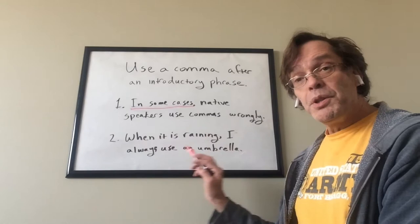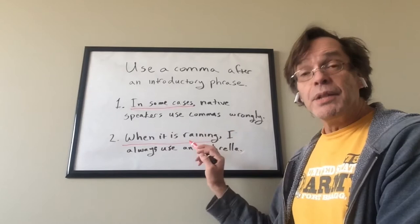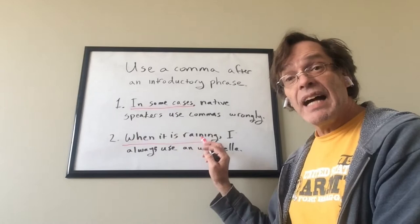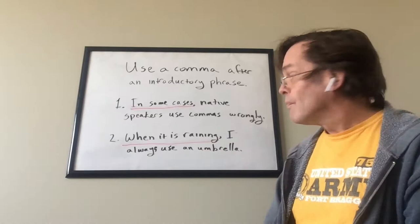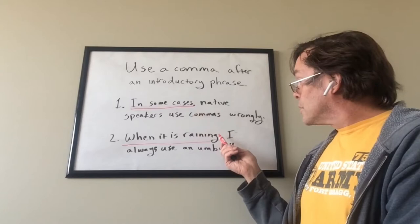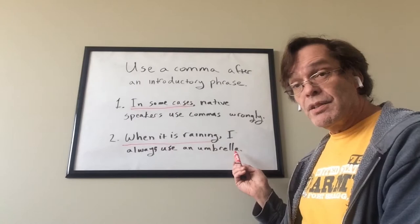Another example: 'When it is raining, I always use an umbrella.' 'When it is raining' is the introductory part of the sentence — it is not a sentence on its own. 'I always use an umbrella' is the main part of the sentence and that can be a sentence on its own. So you use a comma to separate the introductory phrase from the main part of the sentence.